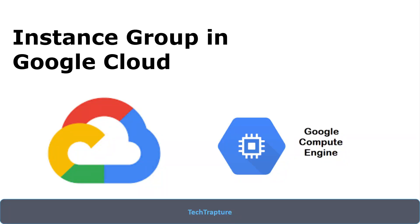Hello all, welcome to TechTapture. In our previous videos we started with our compute services — we worked on Google Compute Engine, deployed a simple web application on it, and also discussed what a startup script is in Google Cloud. In this video we are going one step ahead and discussing about instance groups in Google Cloud. If you already have knowledge on AWS, these are similar to ASG or Auto Scaling Group in AWS.